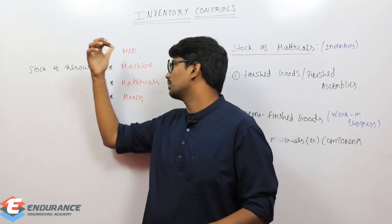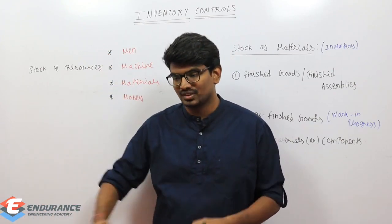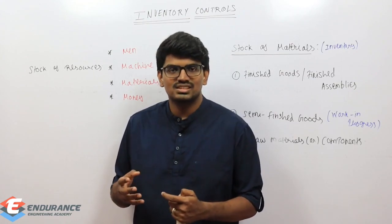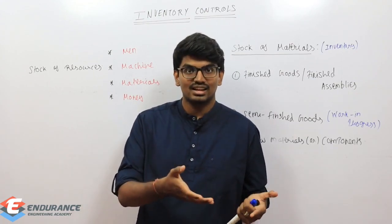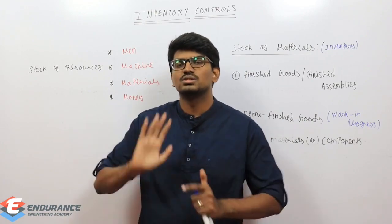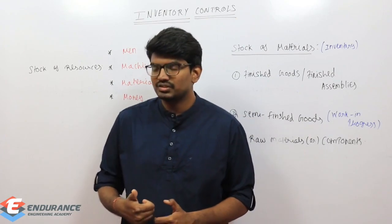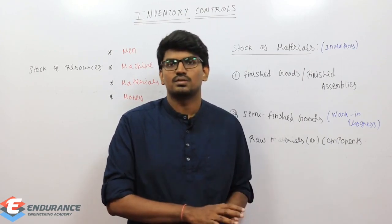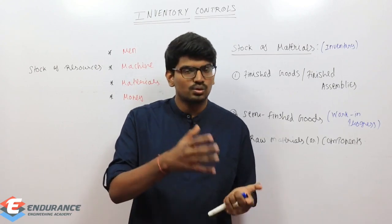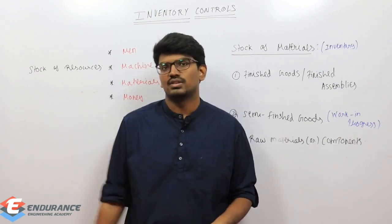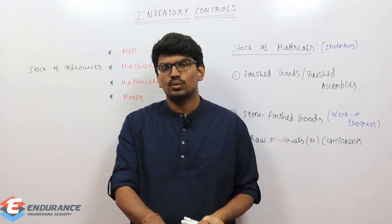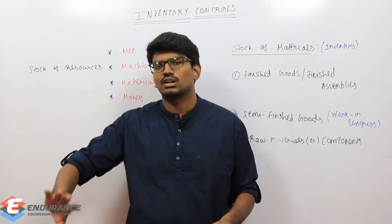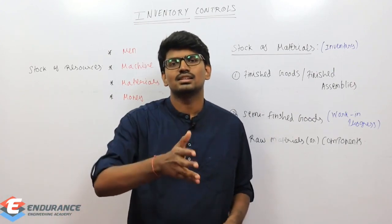Similarly with respect to companies we can talk about men, machine, and materials. Materials are very common. What about machine? Simple: a generator. If there is a sudden emergency, we use the generator — that generator is inventory for us; we store it separately and whenever required we use it. For men: if some work requires five or six persons and suddenly one or two are not well, we need replacements. So we can keep some men also in inventory. Inventory is not only related to material — men, machine, material, and money can all be classified as inventory.